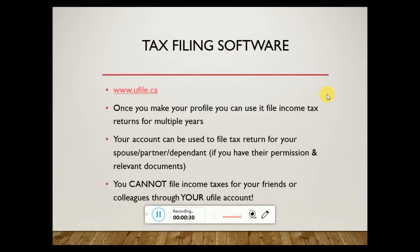Now basically what we will do is we will go to uFile.ca. Now why it is useful: because once you make your profile, you can use it to file income tax returns for multiple years, meaning that you can use the same account for filing any previous year returns as well as for the next coming years when required. Your account can be used to file tax returns for your spouse, partner, or dependent, provided you have their permission and relevant documents.